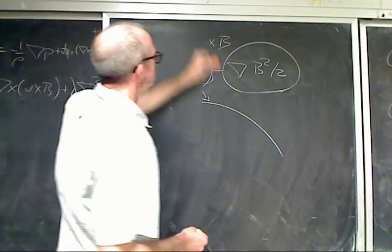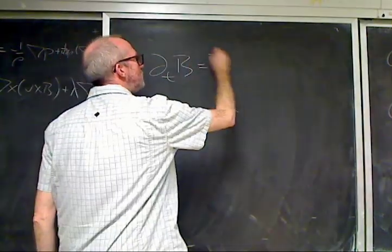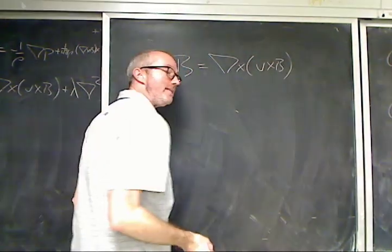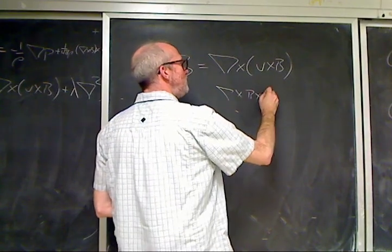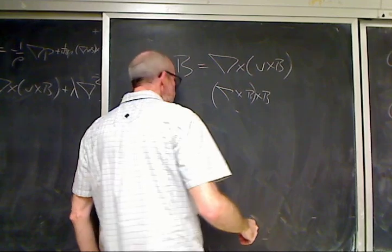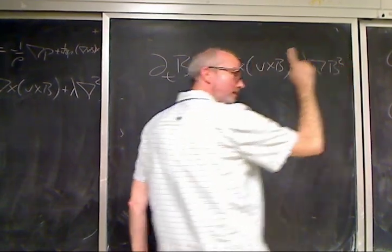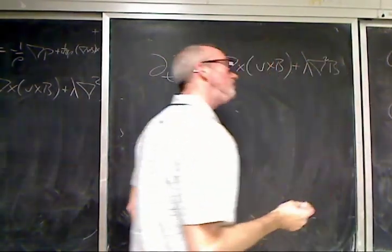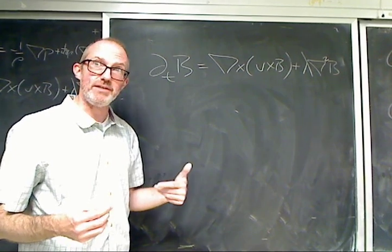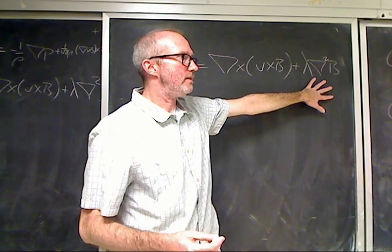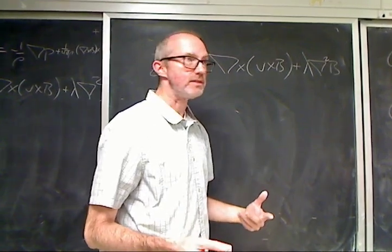Let's talk about the induction equation. We have ∂B/∂t = ∇×(V×B) + λ∇²B. The λ∇²B term is diffusivity — just like in Navier-Stokes, this diffuses the magnetic field through the fluid. This is how the magnetic field is dissipated — this is where non-ideal effects, i.e., resistivity, come from.